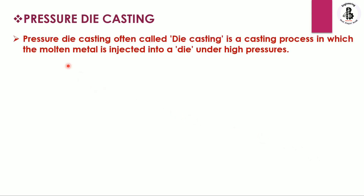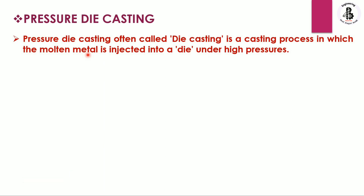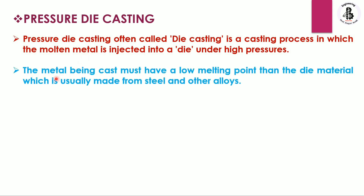Basically, in the case of pressure die castings — often called the die casting process — the molten form of the metal is injected into a die under high pressure. So pressure is used for injecting the molten metal into a die. In die castings we use a permanent die, which is made with steels or some alloying elements.